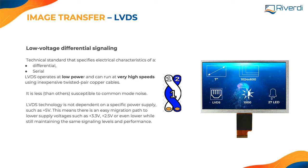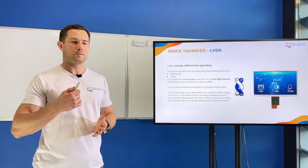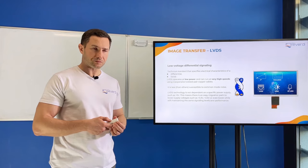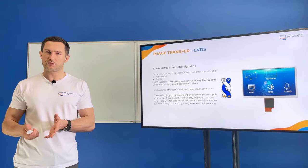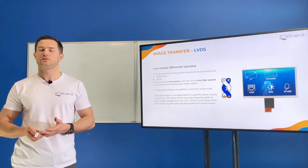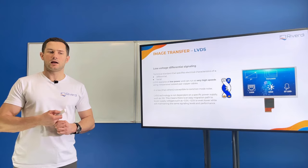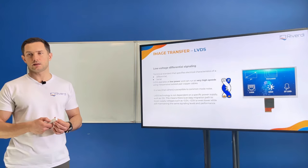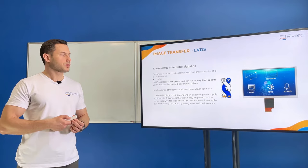We have internal image transfer displays. An image transfer interface means that we can transfer the image continuously at a very high speed — high enough to refresh the display many times per second. This is called the refresh rate of a display. If you go to a display specification, or even a monitor or TV specification, you will see something like refresh rate or maximum refresh rate — for example 60 Hz, which is 60 times per second, or 100 Hz for more advanced displays.